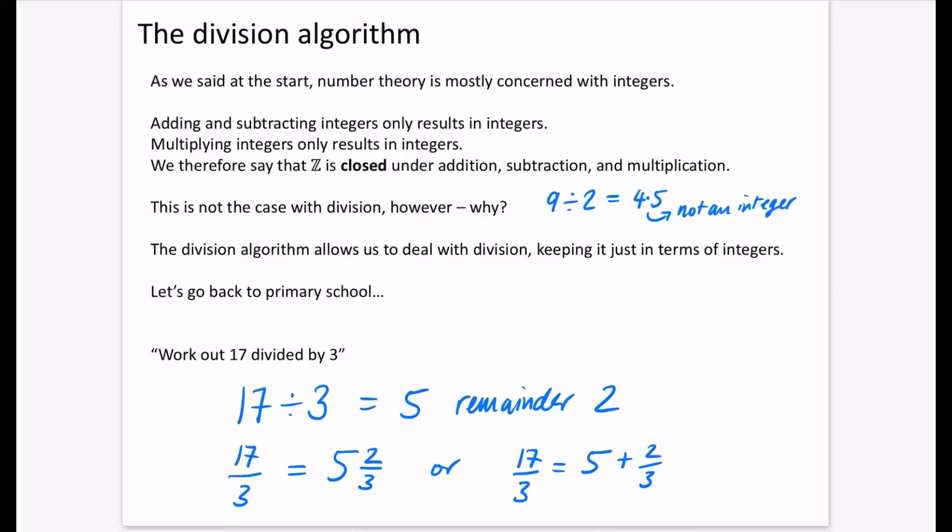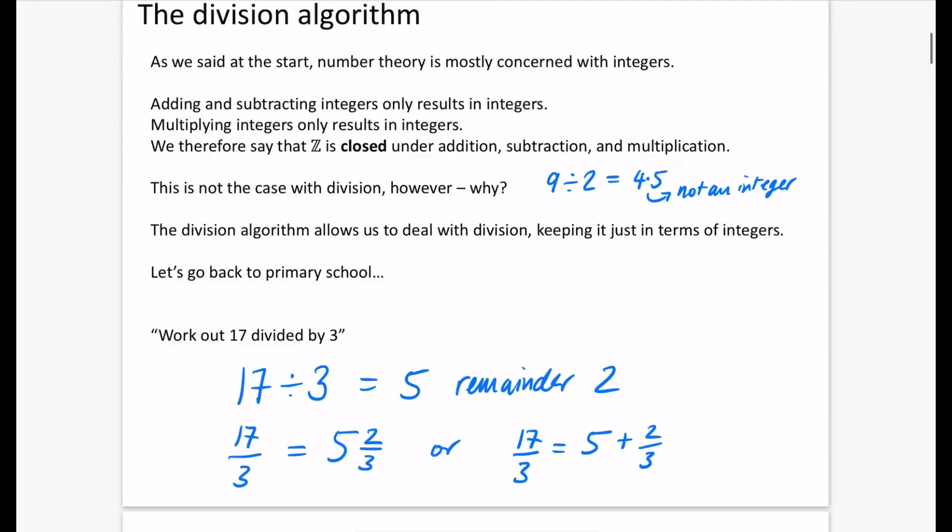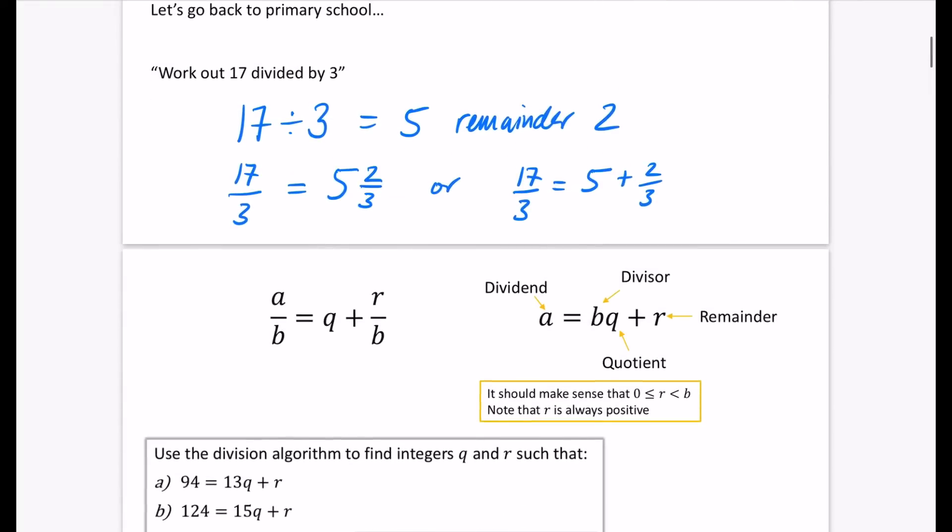So we're going to be concerned with remainders a lot more. And sometimes remainders we call the residue, which means the part that is left over. And so if we were wanting to do A divided by B, we could say that it is equal to Q plus R over B. A divided by B is equal to Q, which is called the quotient, plus the remainder divided by B. And that B part that we've got there is obviously the divisor. It's the thing that we are dividing by.